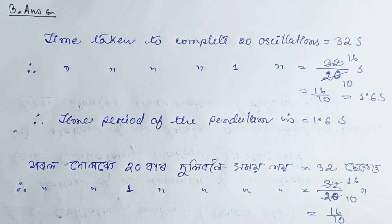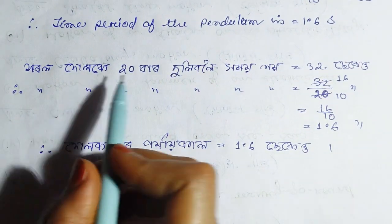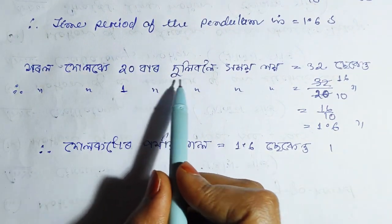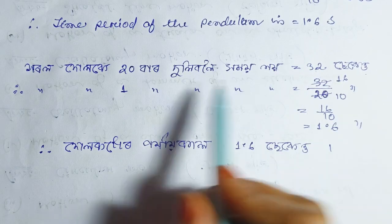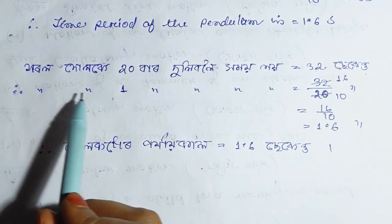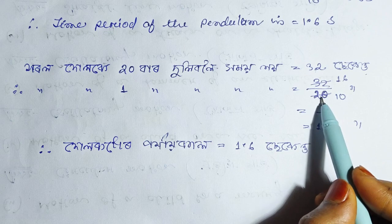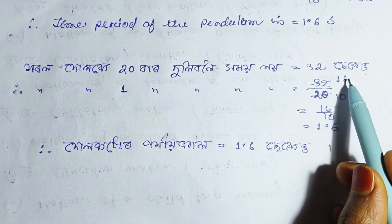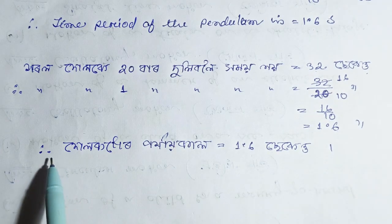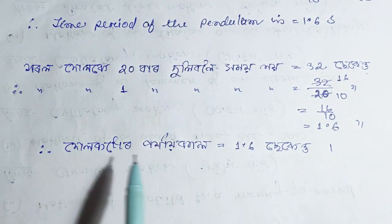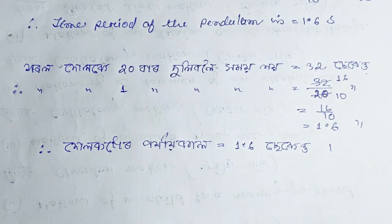So the time period of the pendulum is 1.6 seconds.